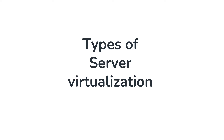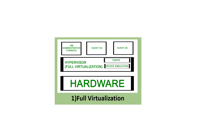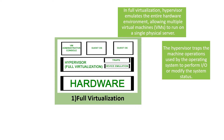Now we can move on to the types of server virtualization. The first type is full virtualization. Here, the hypervisor emulates — that is, mimics — the entire hardware environment, allowing multiple virtual machines to run on a single physical server. It traps the machine instructions used by the operating system to perform I/O or modify the system status.